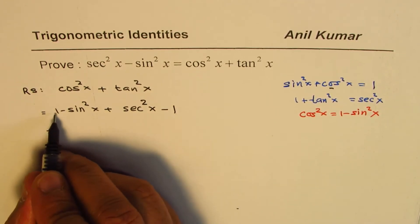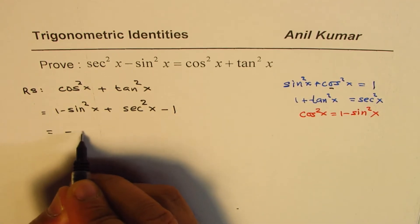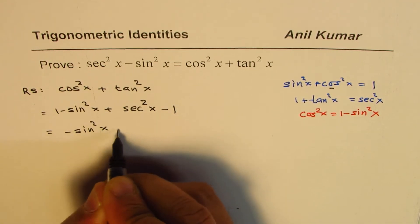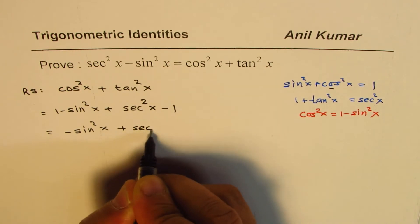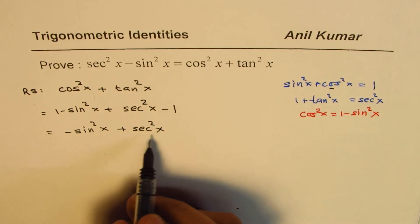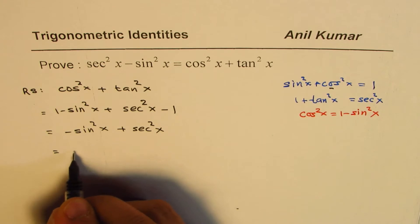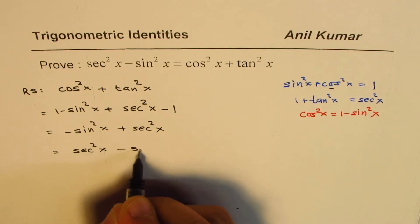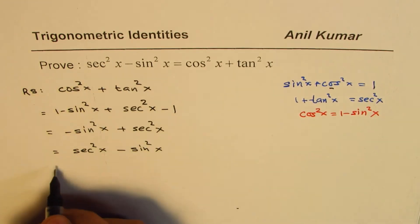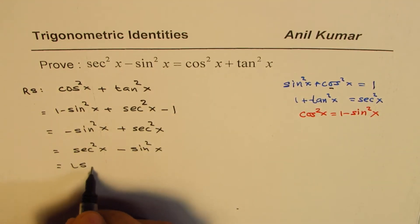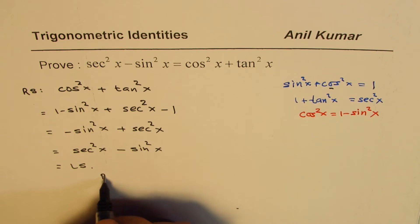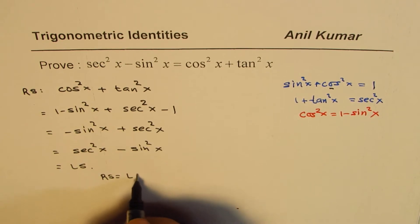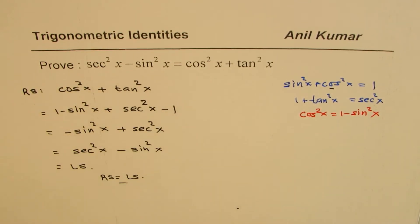Now, 1 minus 1 is 0. So we are left with minus sine square x plus secant square x. And if I rearrange this, I get secant square x minus sine square x, which is the left side. So we have proved that right side equals to the left side, and therefore this identity is perfect for all values of x.